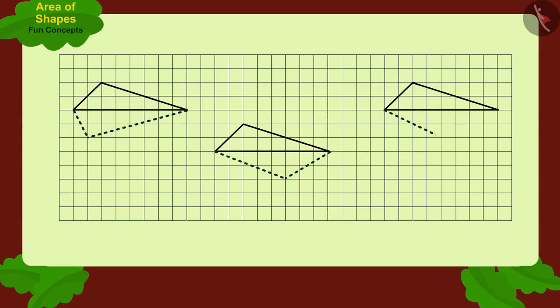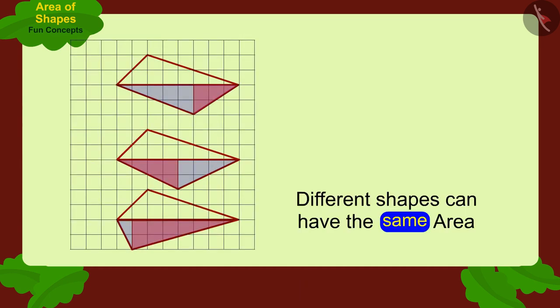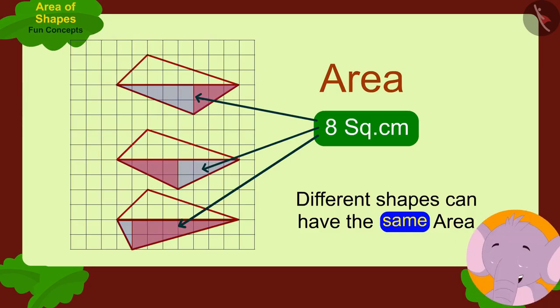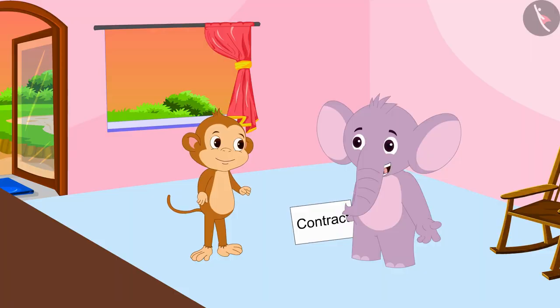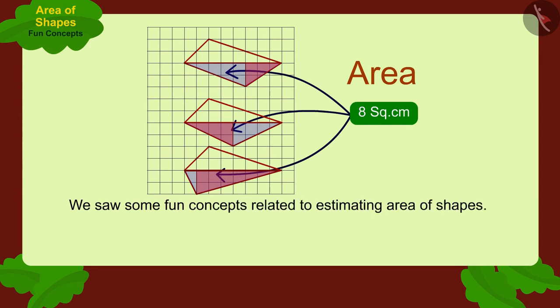Well done, kids! Your answer is absolutely correct. We can also make two such lines in these ways, and the area of the second part of the box is always eight square centimeters. This was possible because different shapes can have the same area. Appu and Babban also understood this, and Babban got the contract by making the right sample. In this video we saw some fun concepts related to estimating the area of shapes.